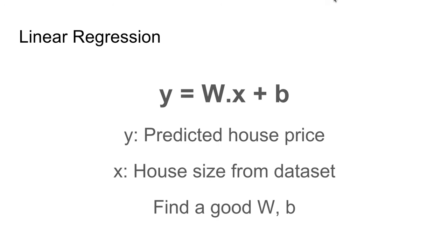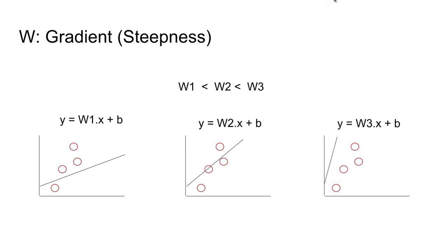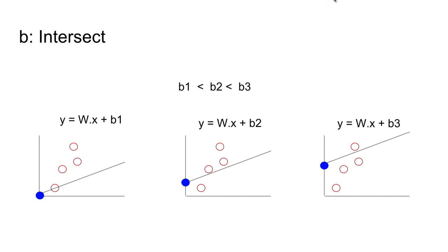Linear regression can be represented as y = wx + b. This is also used in the original TensorFlow tutorial. Given the house size from a dataset, which is x, if we have a good w and b, then we can get a good prediction of y, which is the house price. By tweaking w, which is the gradient of the line, we can find the best fit. Similarly, we can also tweak the value of b to move the linear regression model up and down to find the best fit.